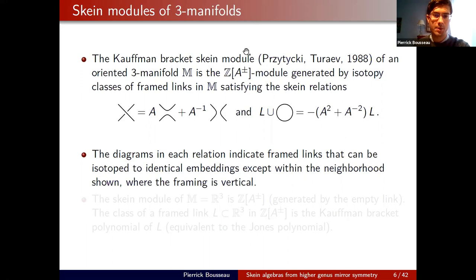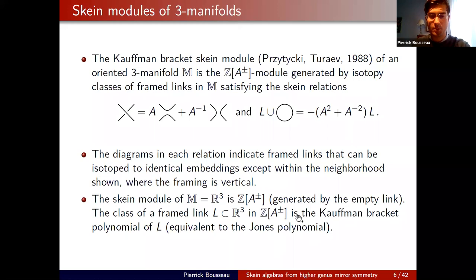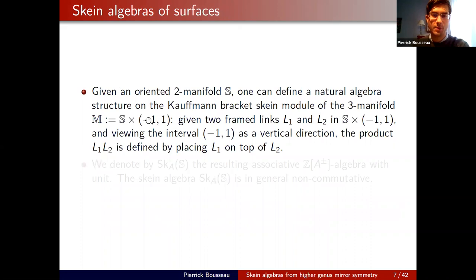The Kauffman-Bracket Skein module of a 3-manifold is the free module over all links divided by these simple-looking relations. For example, the skein module of ℝ³ is one-dimensional over the base ring — the class of a framed link is just an element of the base ring, namely its Kauffman-Bracket polynomial, essentially equivalent to the Jones polynomial. Historically, Jones defined polynomials for links in ℝ³, then Kauffman introduced the Kauffman-Bracket polynomial, and the skein module generalizes this from ℝ³ to general 3-manifolds.